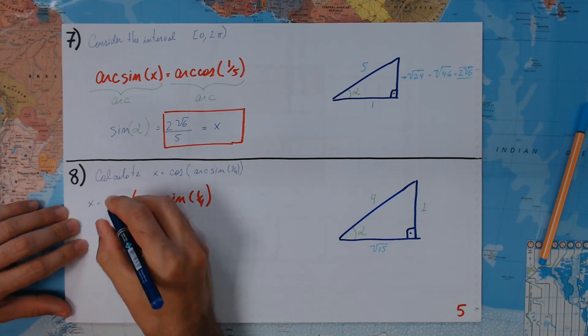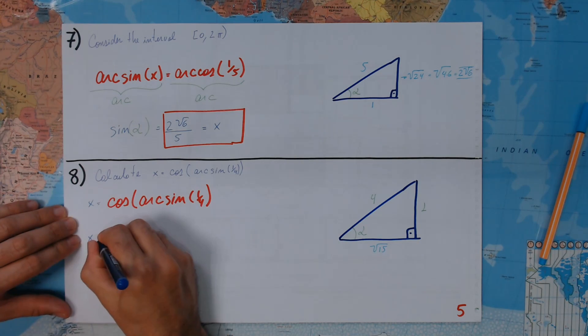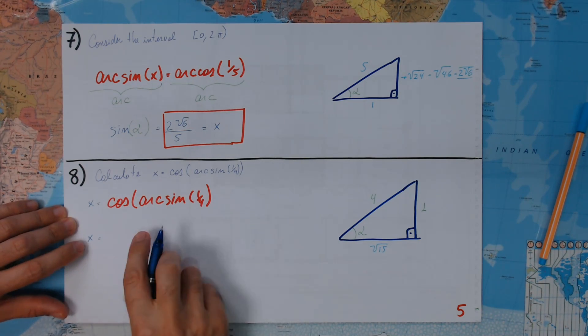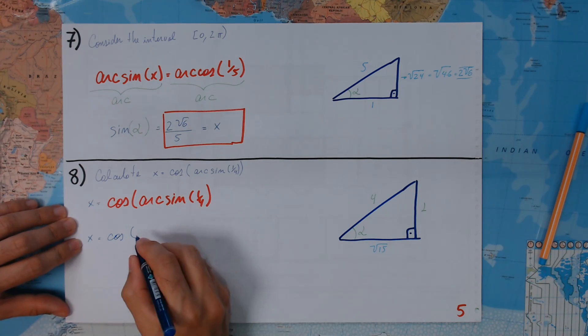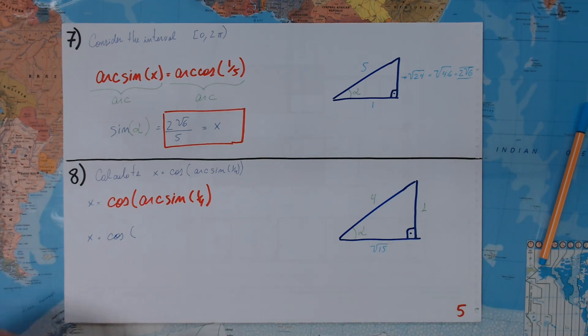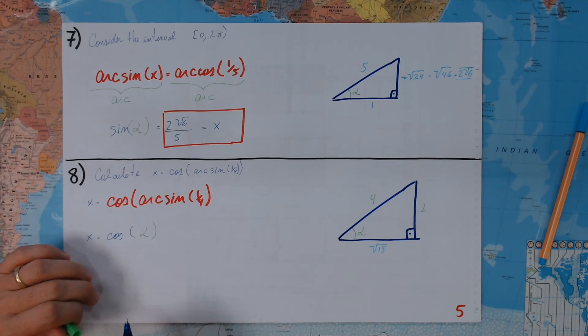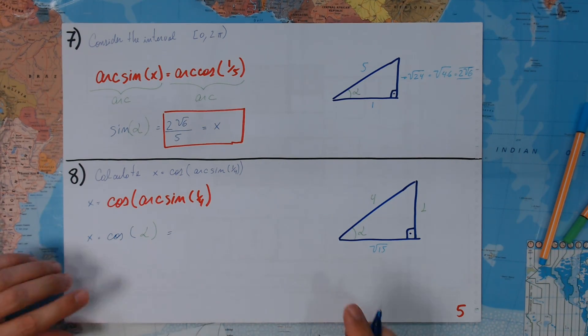So this is going to be X. X is this. What is going to be the cosine of that alpha? That's what is being asked. And the cosine, isn't it?